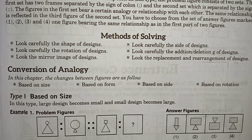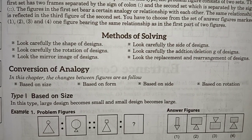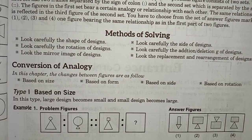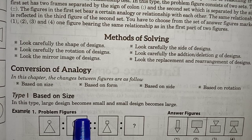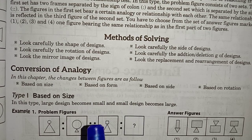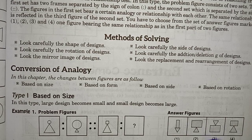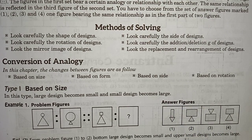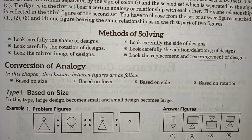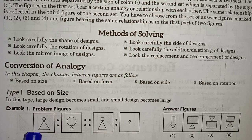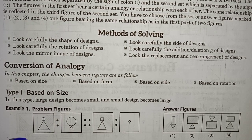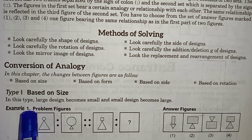I will show you one question here. This first question is based on size. They will give three figures as the problem figure — the first and second are related, and the third and fourth are related, but the third is given and the fourth we have to find. There are four options and we have to select one. In the first figure you can see one triangle and one circle. The size of the triangle is big and the size of the circle is small.